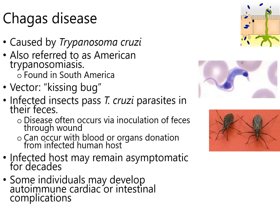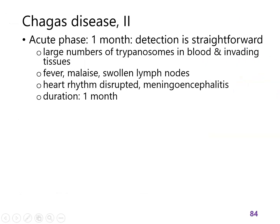If the person rubs their face, some of the feces get smeared into their blood, and then they have trypanosomes in their blood, which is terrible. These trypanosomes will live in that person for decades. There are asymptomatic latencies where the trypanosomes don't cause any damage, and some people will go from that latency to autoimmune diseases where the immune system attacks the heart or the intestines.